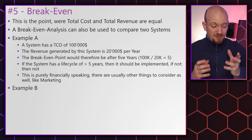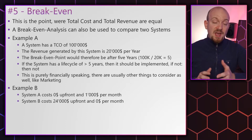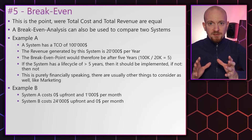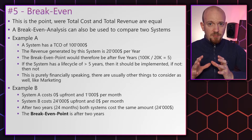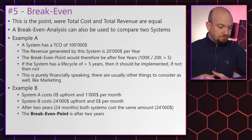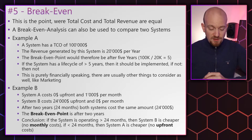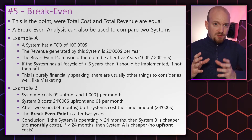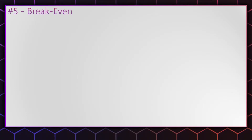Let's make another example. System A costs $0 upfront and $1,000 per month. System B costs $24,000 upfront and $0 per month. After two years both systems cost the same — $24,000. The break-even point therefore is $24,000 after two years. If the system operates for more than 24 months, System B is cheaper because it has no monthly costs. If it runs for less than 24 months, System A is cheaper because it has no upfront costs. Here's a diagram showing this crossing point — the break-even point.